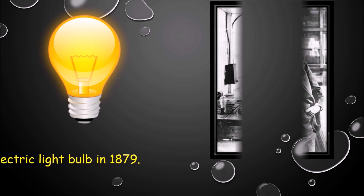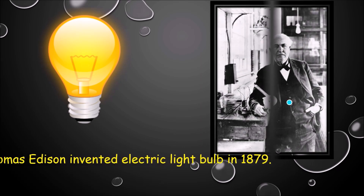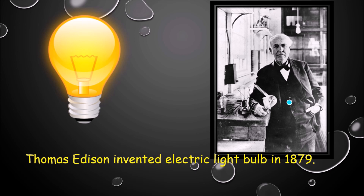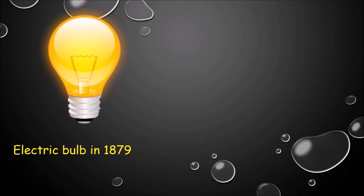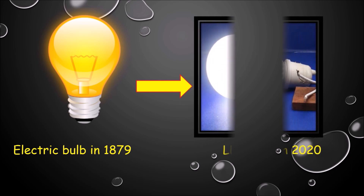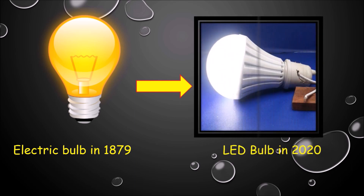This is the electric bulb. Thomas Edison invented the electric light bulb in 1879. It makes our life very easier and smoother — otherwise we would all be sitting with candles. The electric bulb in 1879 looked like this, and nowadays we are using LED bulbs in 2020 which saves our electricity.